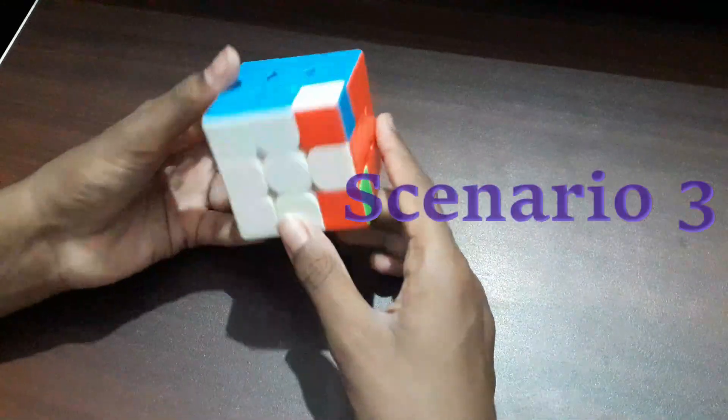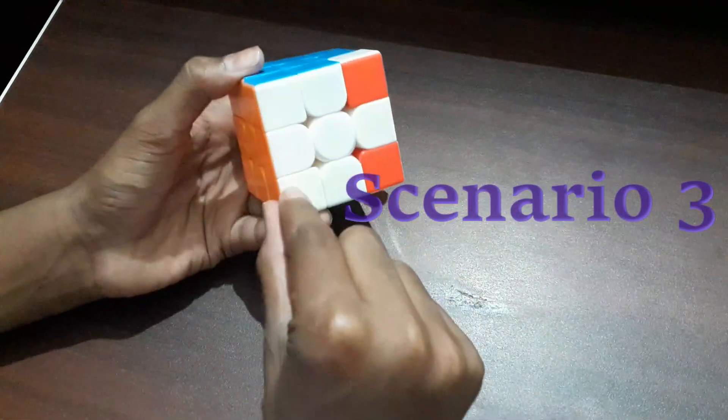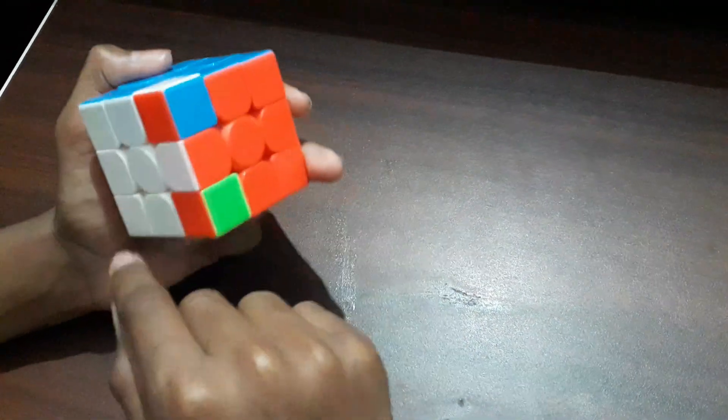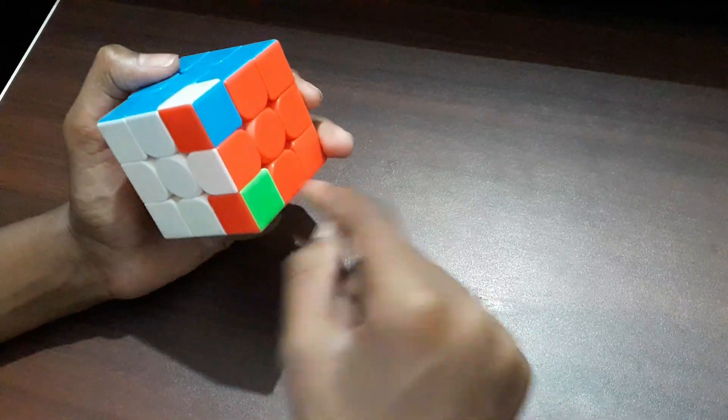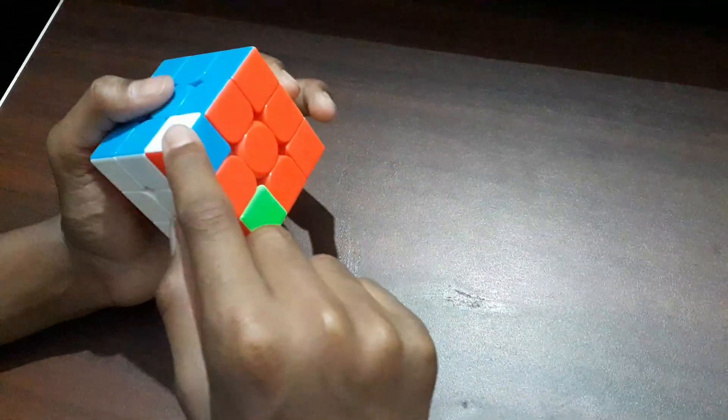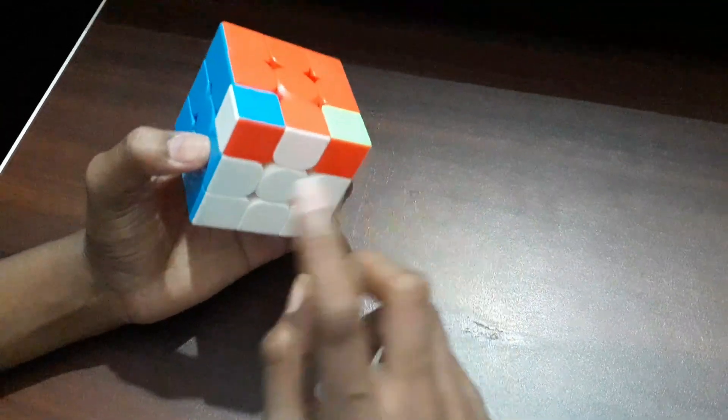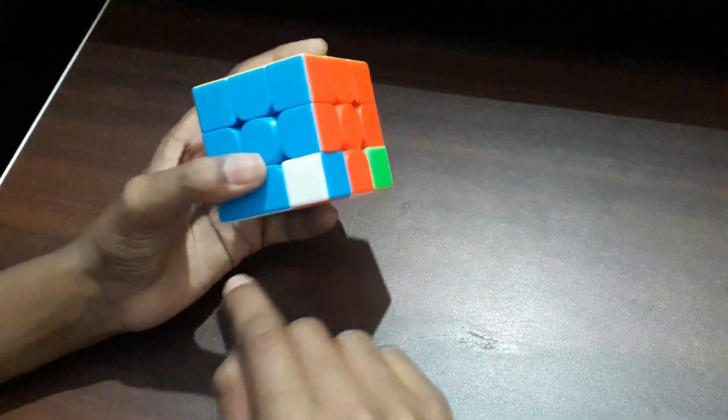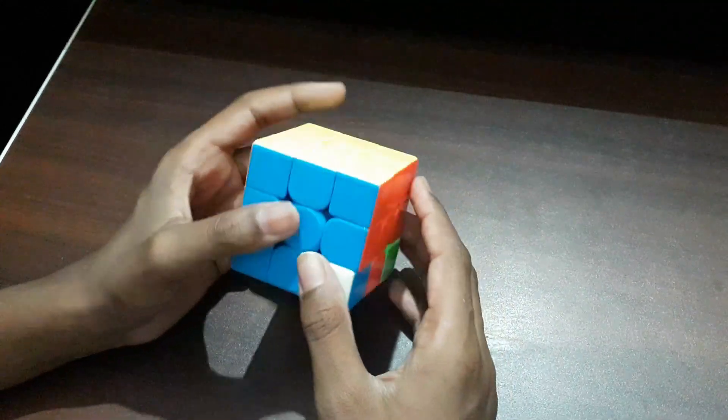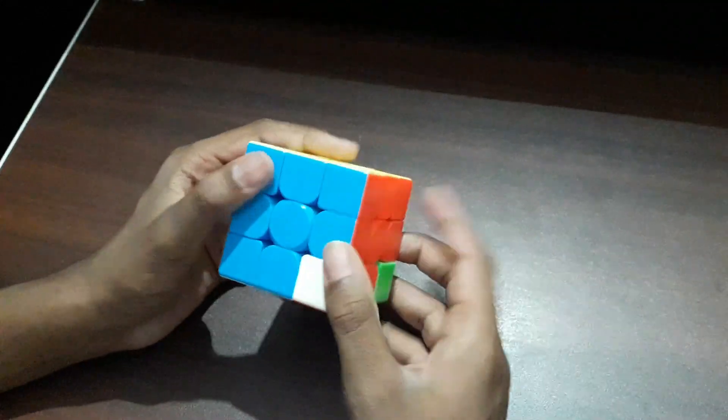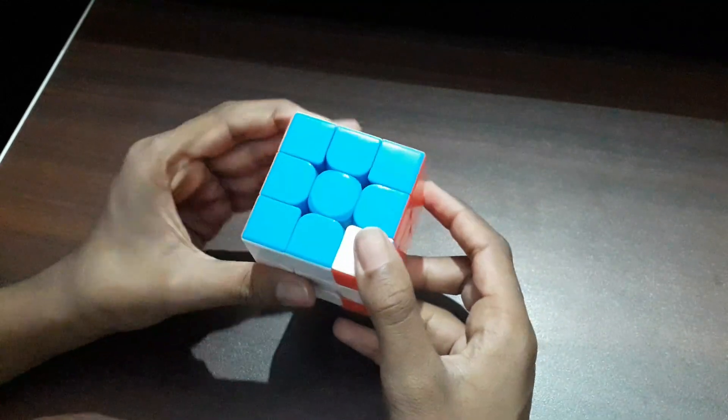In this scenario, we will be getting two corner pieces at the right position but the other two will be either flipped or in the wrong position. In order to correct something like this, we must use the corner technique we used earlier.